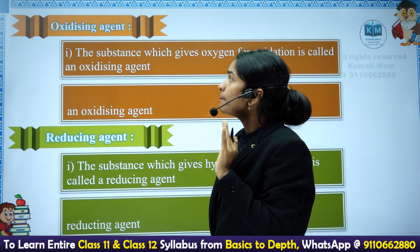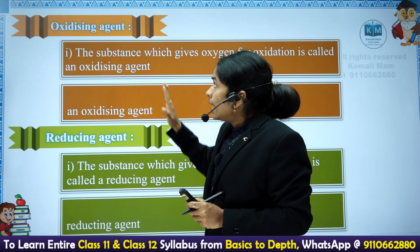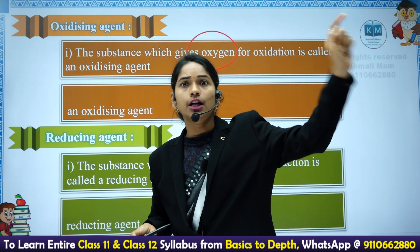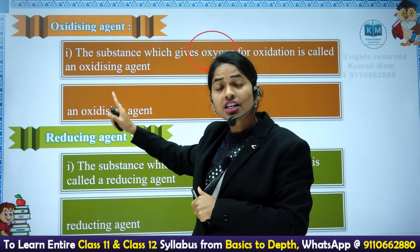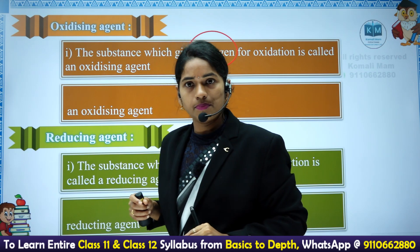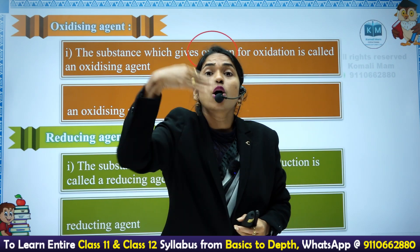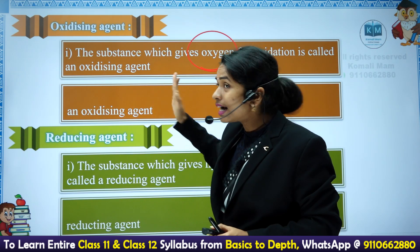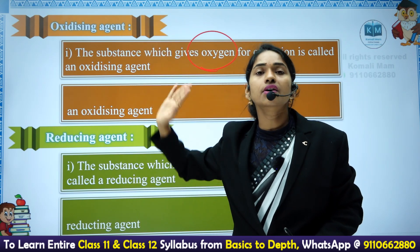Let us see some examples. But before that, understand what is an oxidizing agent and what is a reducing agent. The substance which gives oxygen — see, I told you this substance is undergoing oxidation. How did that element get the oxygen? Another substance is giving it. The substance which is giving oxygen to another element to undergo oxidation, we call it the oxidizing agent. The substance which is giving oxygen or removing hydrogens, we call it the oxidizing agent.